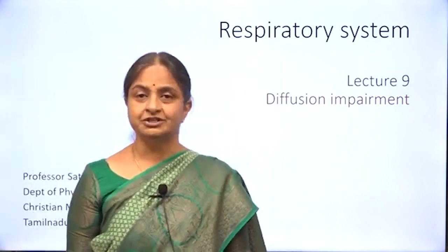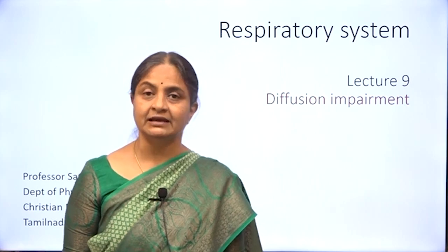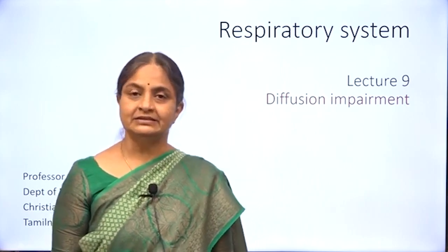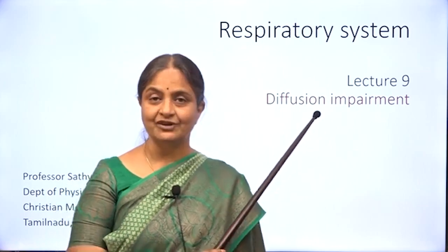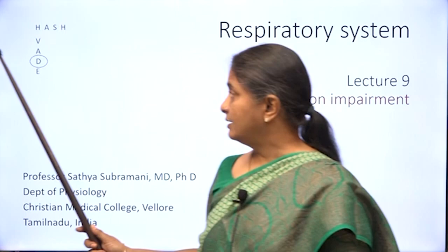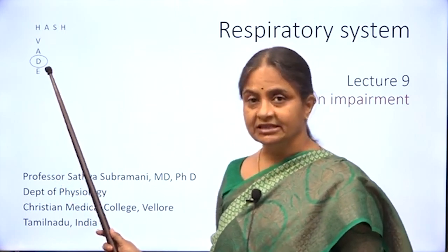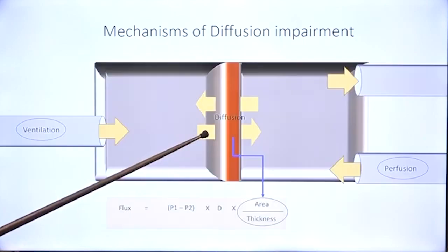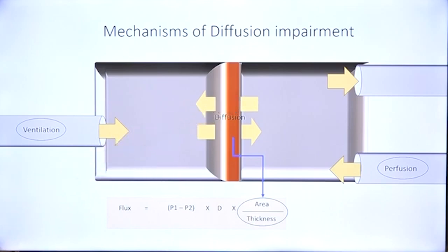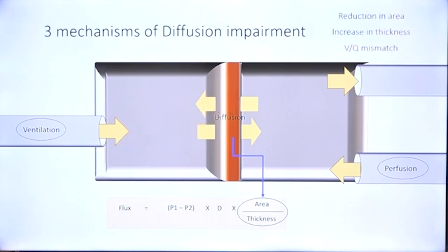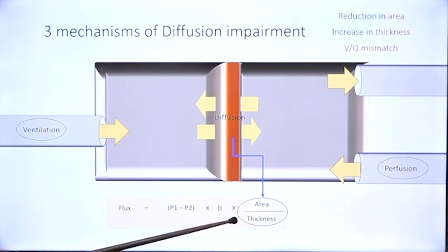Having discussed diffusion of oxygen and carbon dioxide in the lung in the previous two lectures, it is the right time for us to learn about mechanisms of diffusion impairment, the phenomenon which appears as the D in our mnemonic. Diffusion of oxygen occurs from the alveolus to the capillary and carbon dioxide in the reverse direction. The mechanisms of diffusion impairment involve reduction in surface area, increase in thickness of the respiratory membrane, and another phenomenon called VQ mismatch which we will discuss in the next lecture.